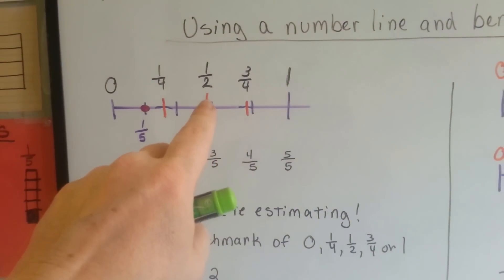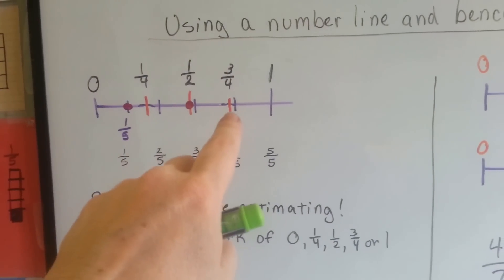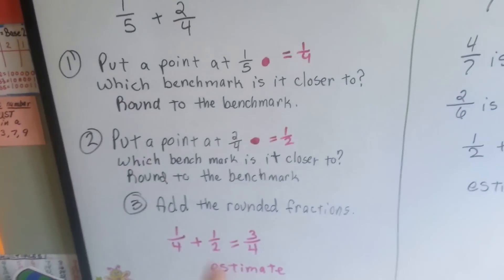If we're at a half and we added a fourth more, that puts us at 3 fourths. So 3 fourths is our estimate.